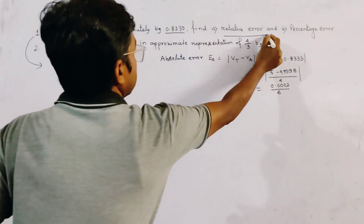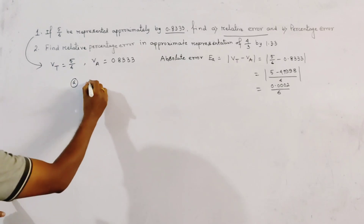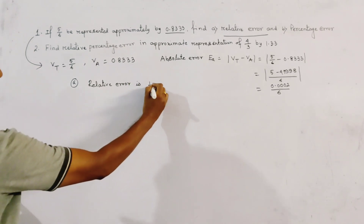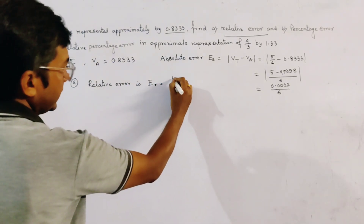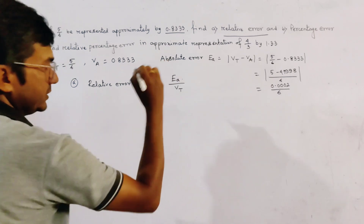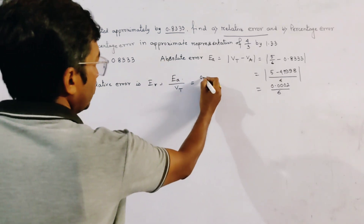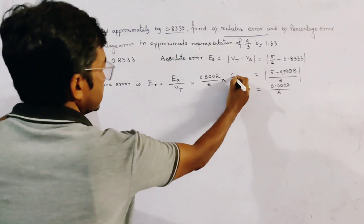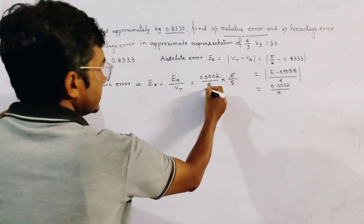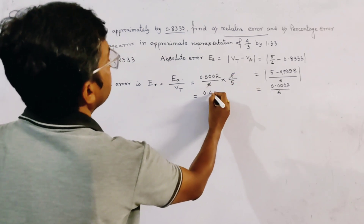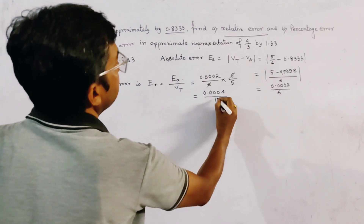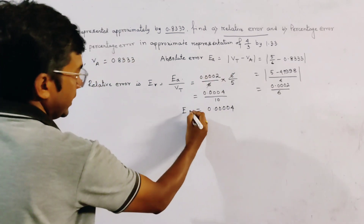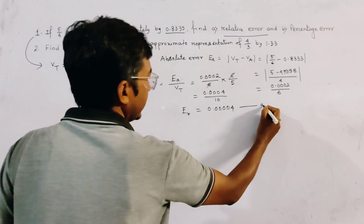Now, relative error Er is given by Ea divided by Vt. So this is (0.0002/6) divided by Vt, which means multiplied by 6/5. We cancel out the 6, giving 0.0002/5 = 0.00004. This is the relative error and the answer to part A.